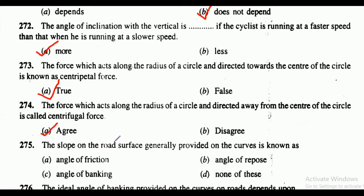Question 274: the force which acts along the radius of a circle and directed away from the center of the circle is called centrifugal force — agree or disagree? The answer is agree. Question 275: the slope on the road surface generally provided on the curves is known as — the correct answer is option C, that is angle of banking.